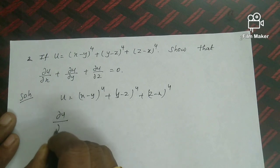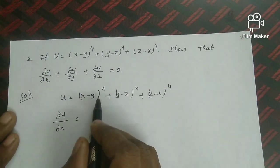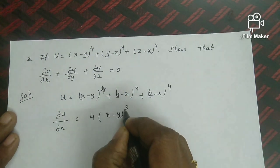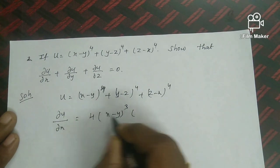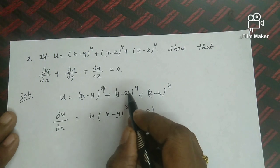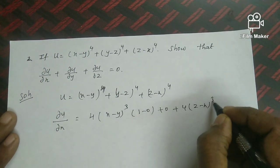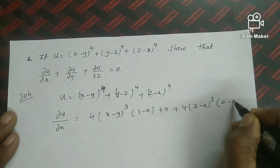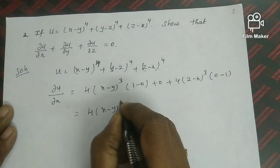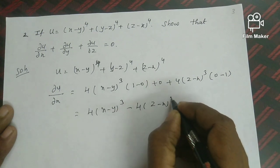Computing ∂u/∂x with y and z treated as constant: differentiating (x-y)⁴ gives 4(x-y)³ × 1 = 4(x-y)³. Differentiating (y-z)⁴ with respect to x gives 0. Differentiating (z-x)⁴ gives 4(z-x)³ × (-1) = -4(z-x)³. So ∂u/∂x = 4(x-y)³ - 4(z-x)³. This is equation 1.